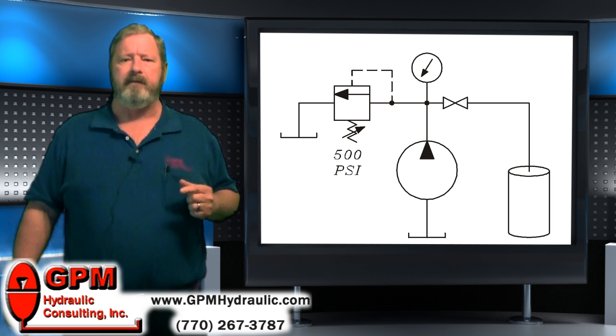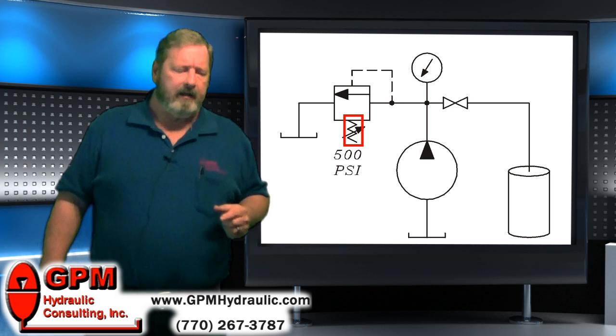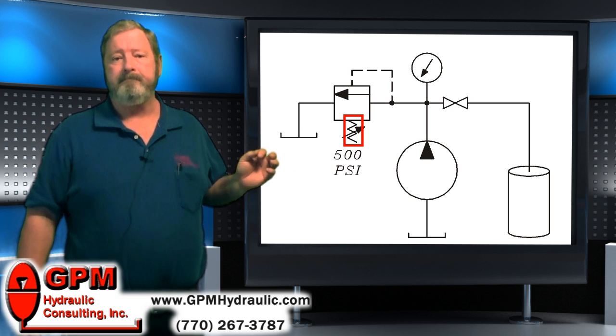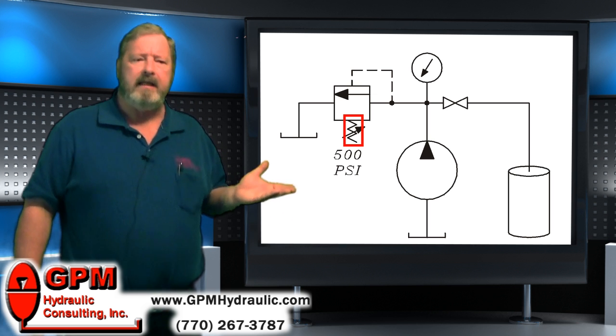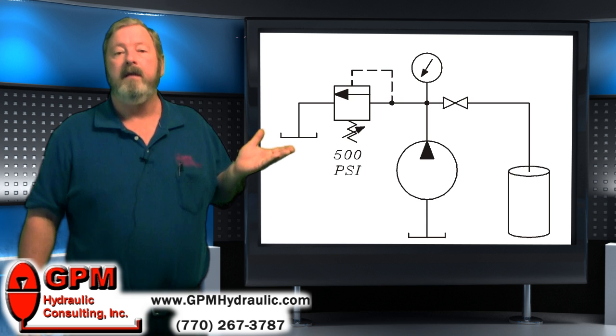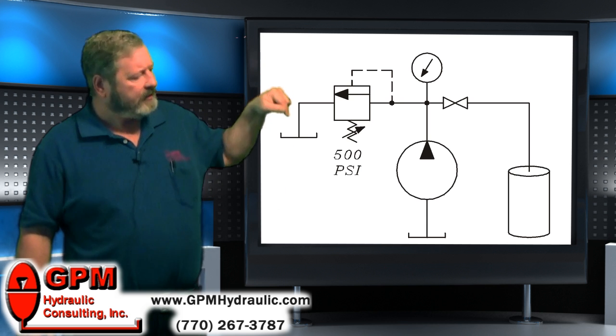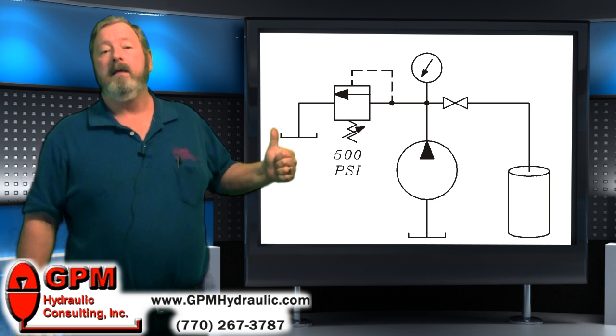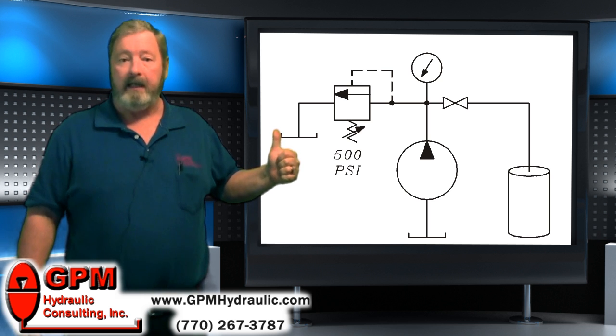A good way to think of a relief valve on a schematic, you see this jagged line under here, that indicates a spring, and think of the spring as pushing the arrow up away from the ports, holding the valve closed. This means that something needs to push down harder than the spring is pushing up in order for the valve to open and allow flow.